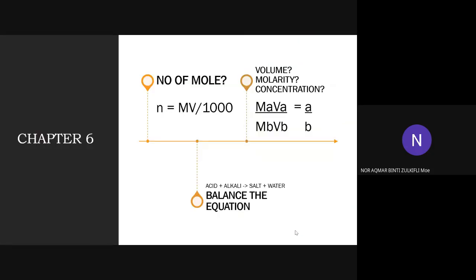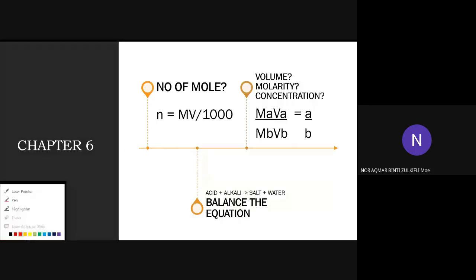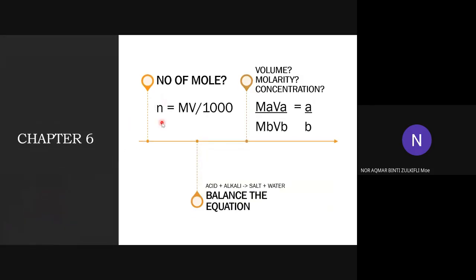For introduction, the most important thing in this chapter is you must know the number of mole. When the question asks you about number of mole, you need to know the formula: N equals MV over 1000, where N is for number of mole, M is the molarity or concentration, and V is for volume. In the examination, this formula is not available, so you need to memorize it and choose which one is related to the question.